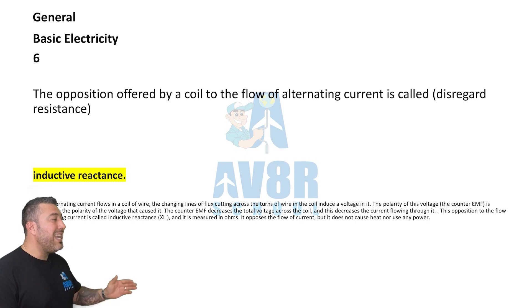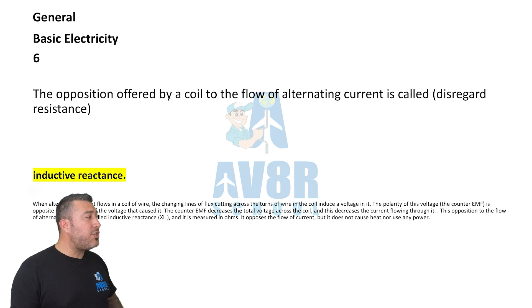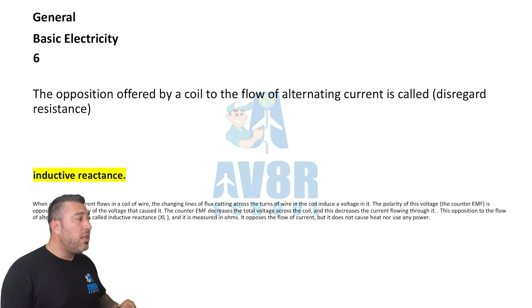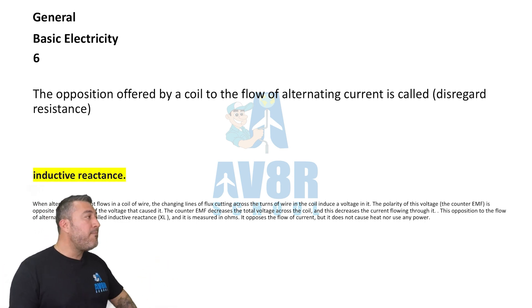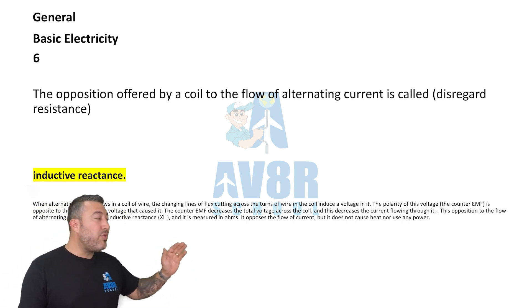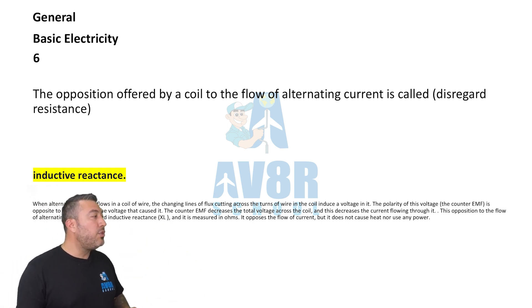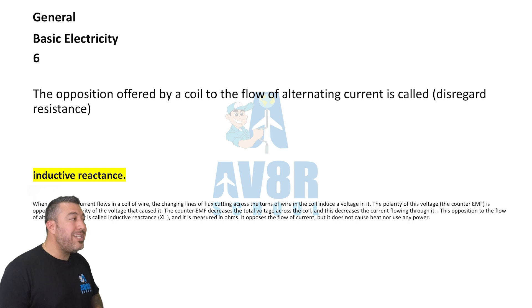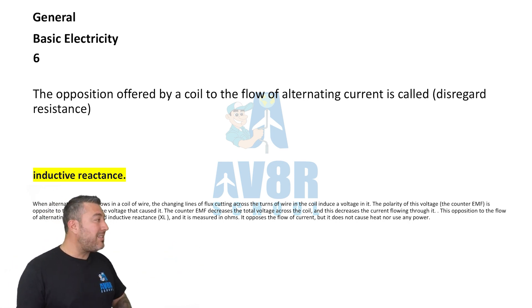Question number six: inductive reactance. The opposition offered by a coil to the flow of alternating current is called inductive reactance.